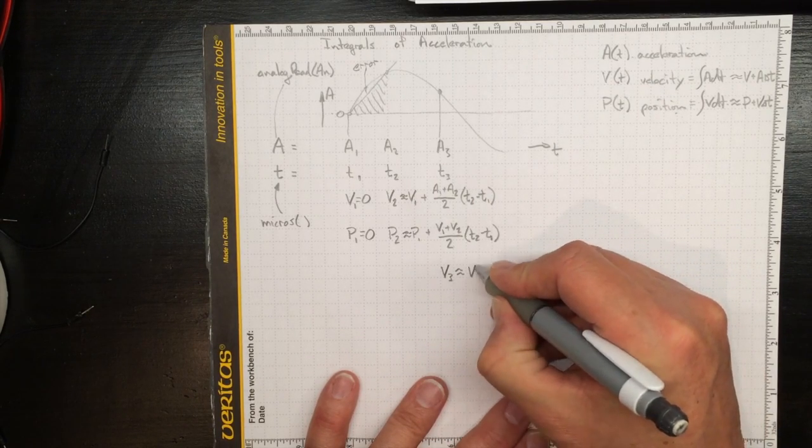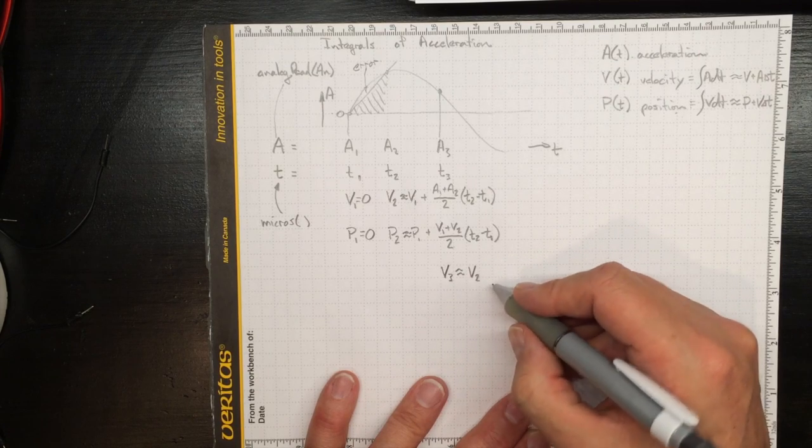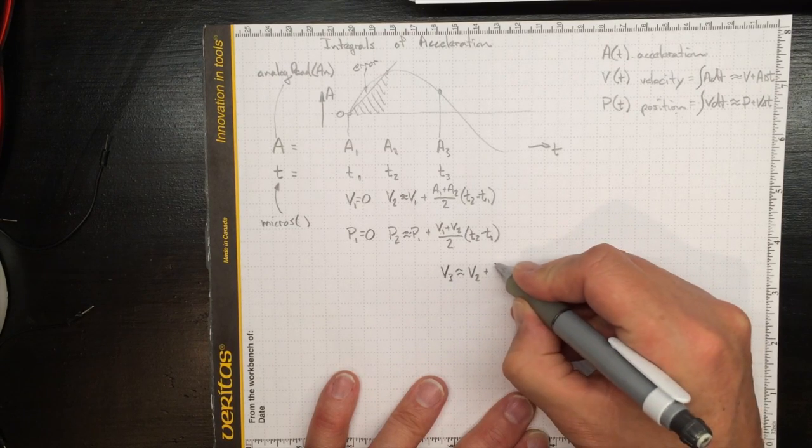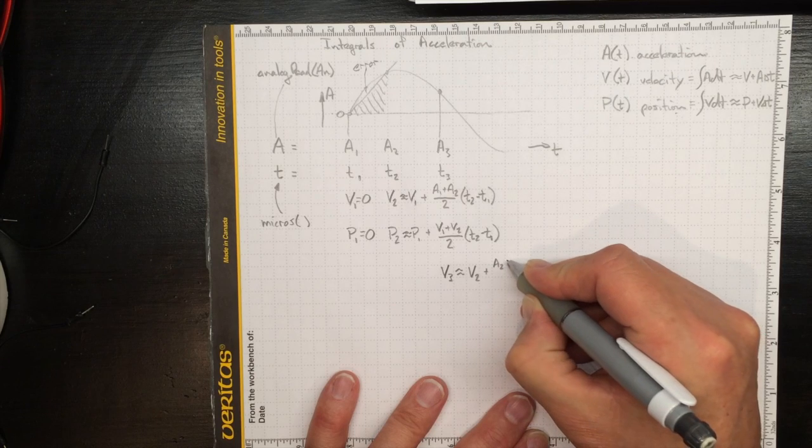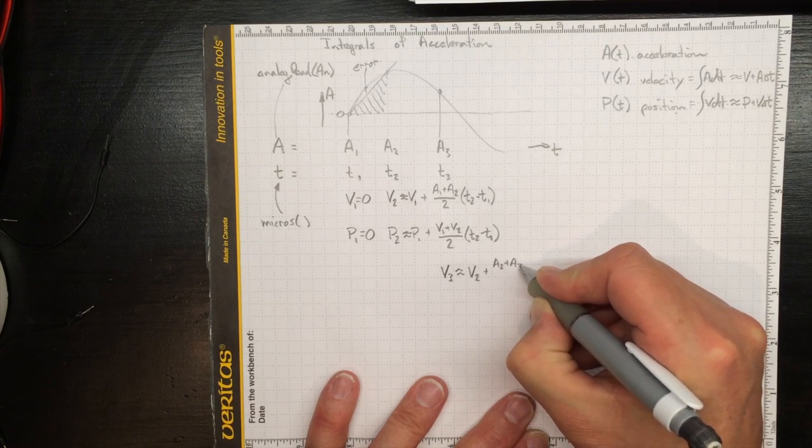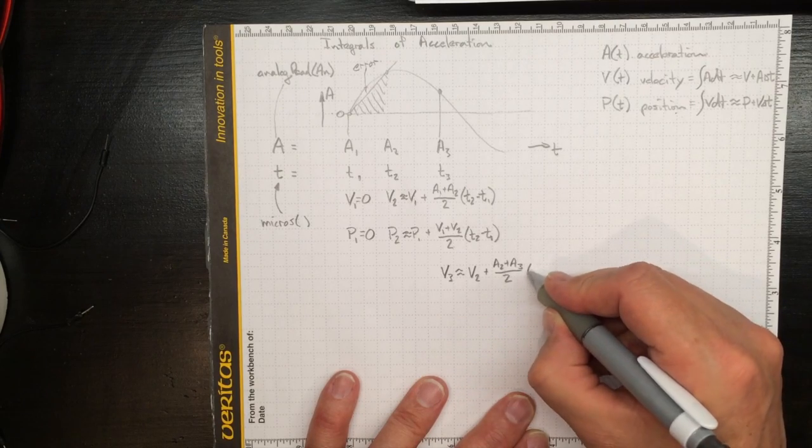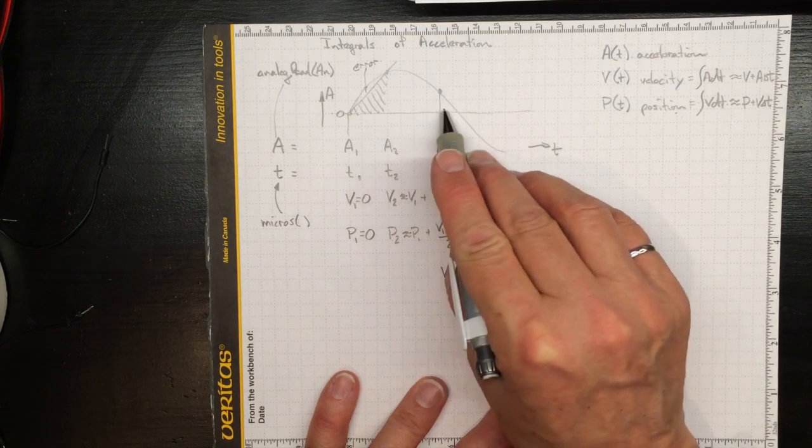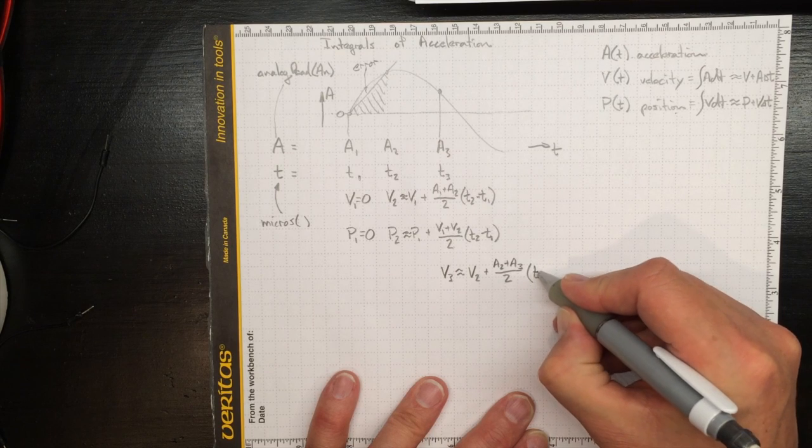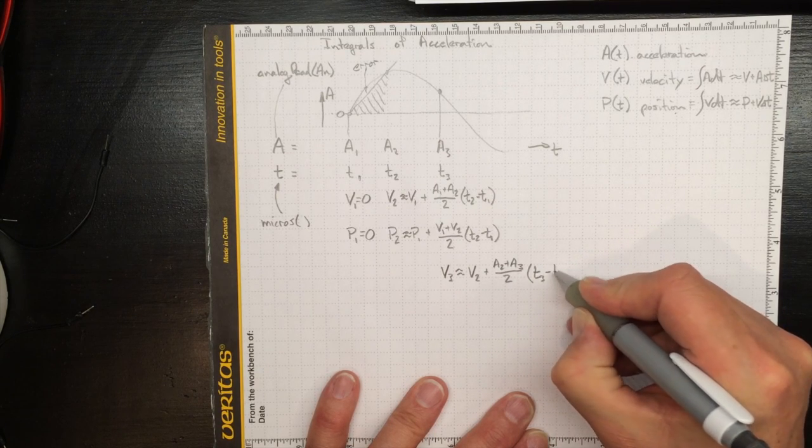V3 will be whatever the velocity was at time two plus some average acceleration between points two and three. So a2 plus a3 divided by two times the difference in time between those two times, t3 minus t2.